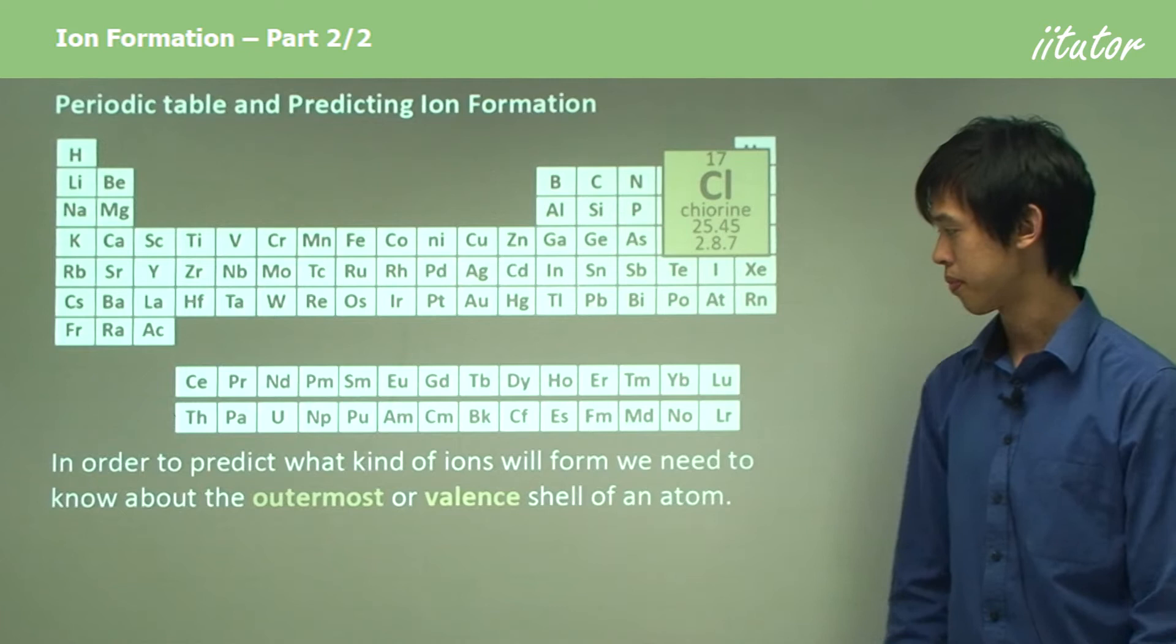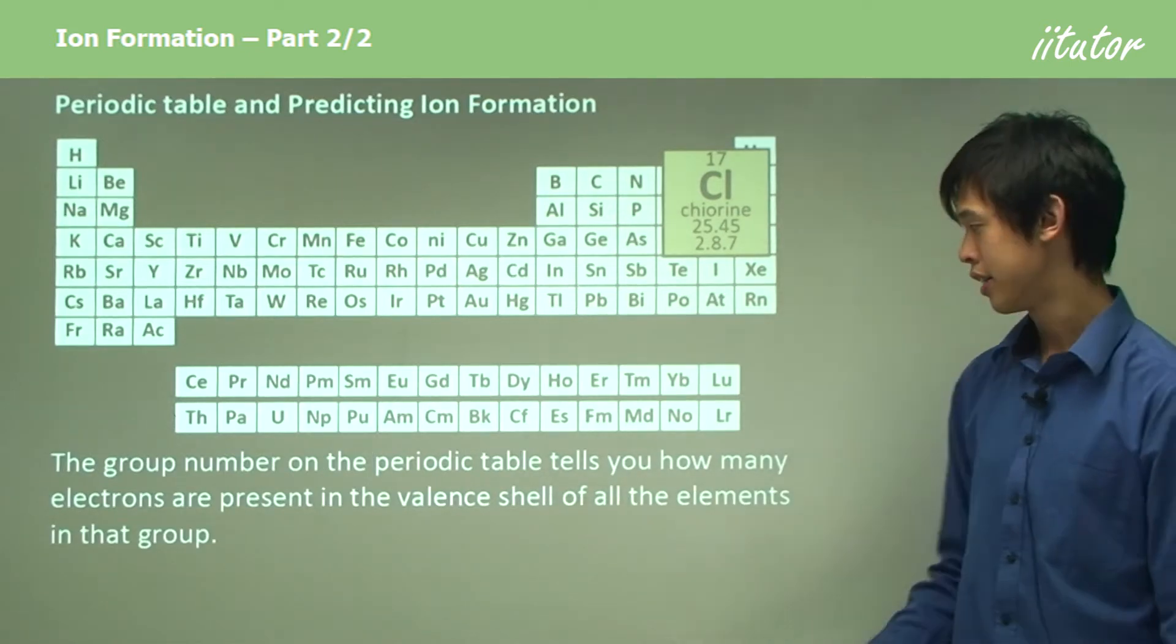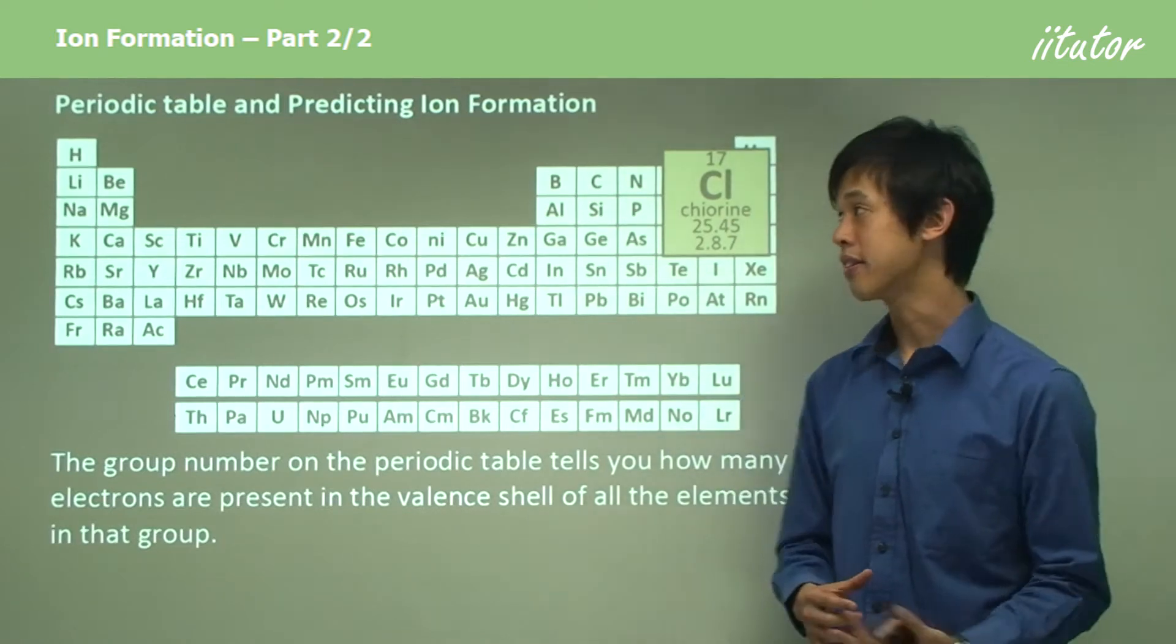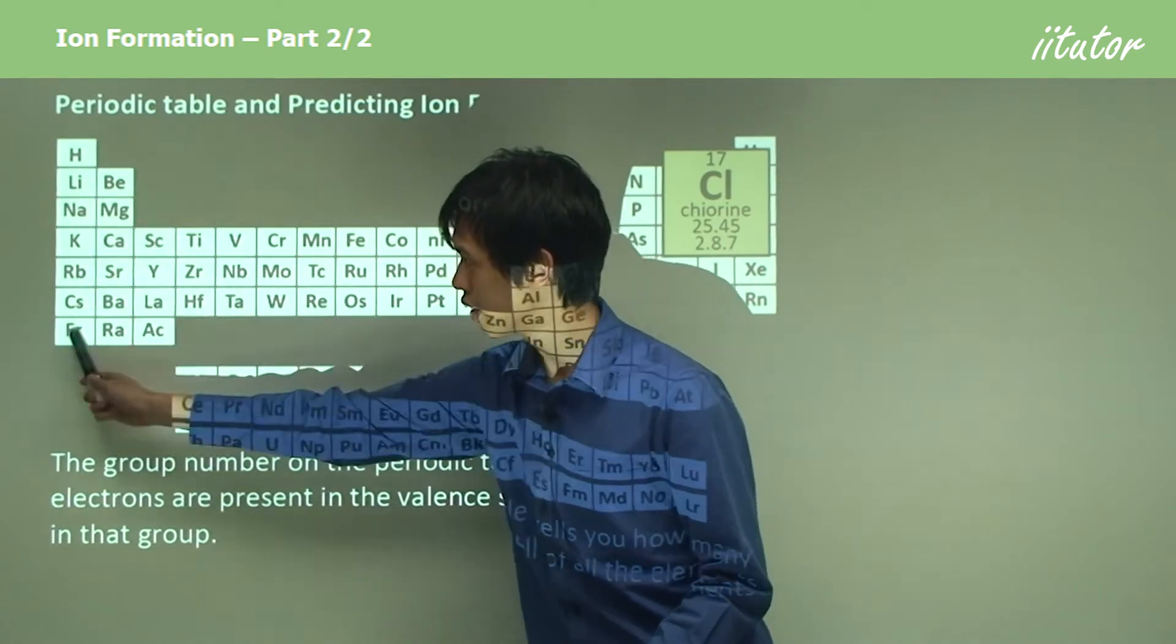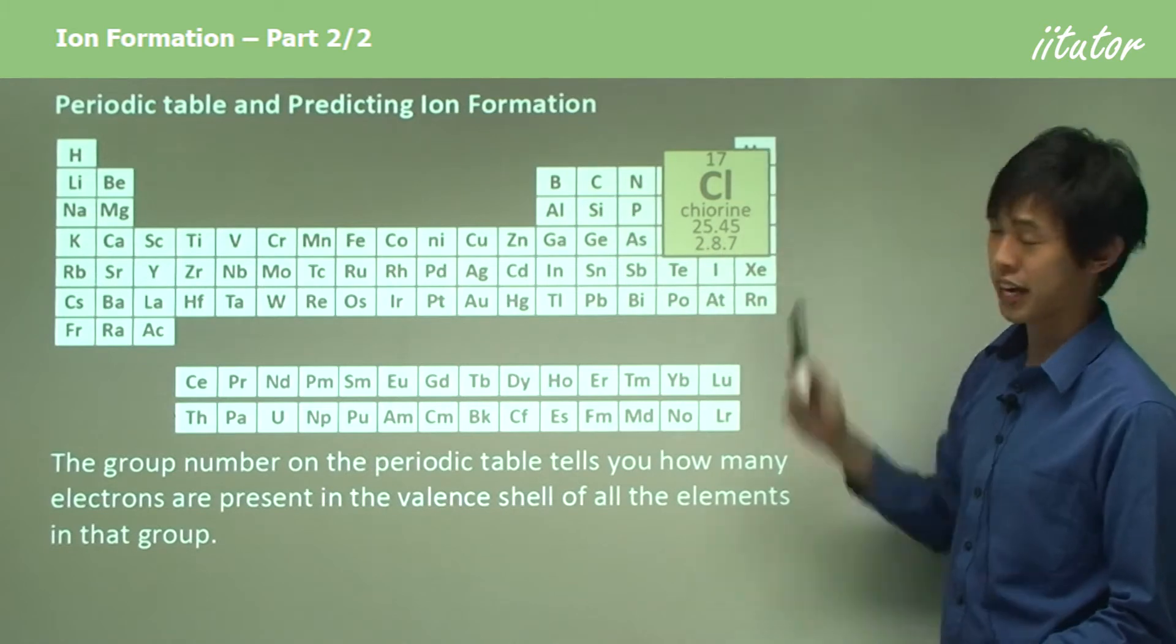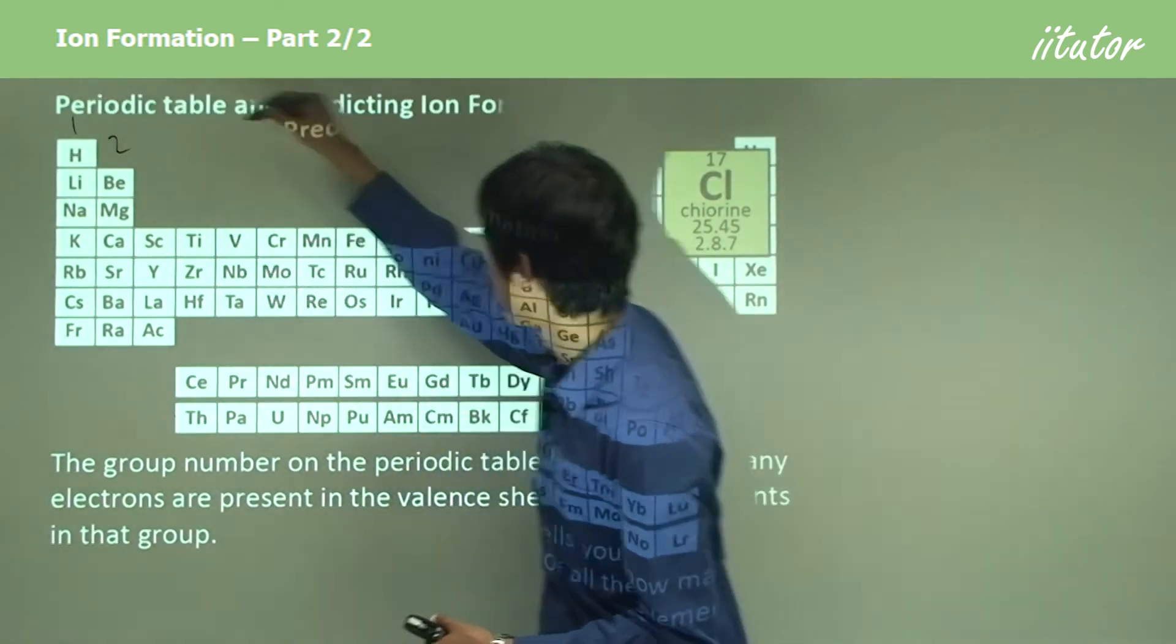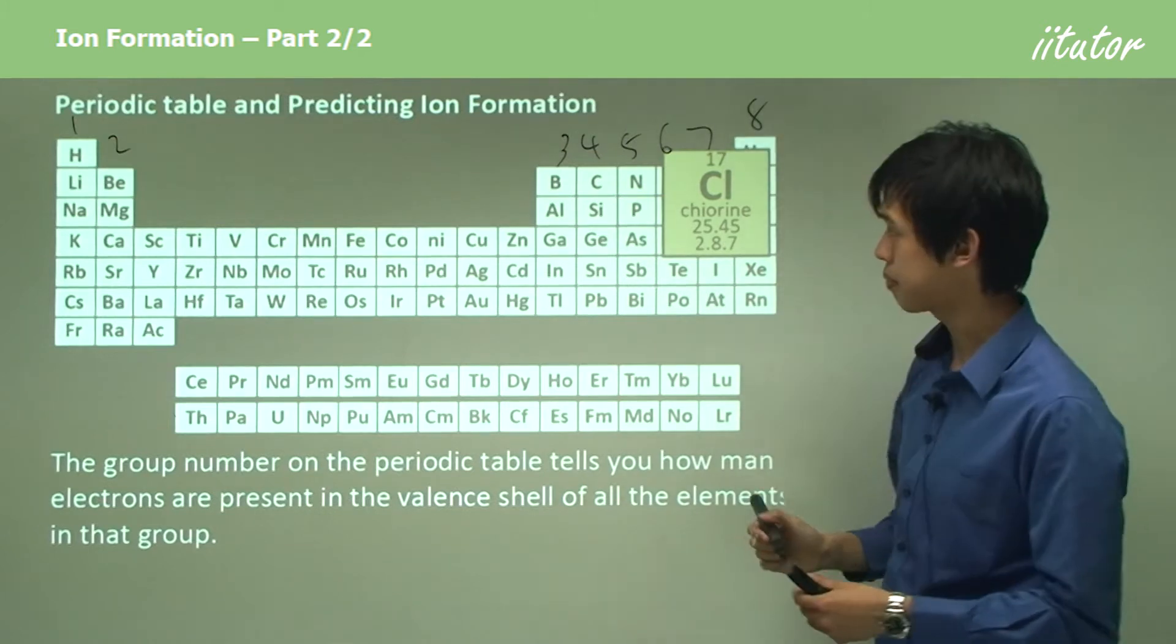The group number on the periodic table tells you how many electrons are present in the valence shell of the elements in that group. You know what the groups are - here's group one, group two, group three, group four, group five, group six, group seven, group eight. They're just the column numbers. That number tells you a lot more than just what column this particular element is in.